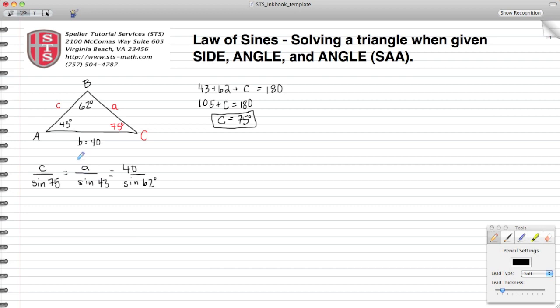So let's go ahead and first concentrate on this fraction and this fraction. I'm going to set those two equal to each other creating a proportion, so I'm left with C over the sine of 75 is equal to 40 over the sine of 62.